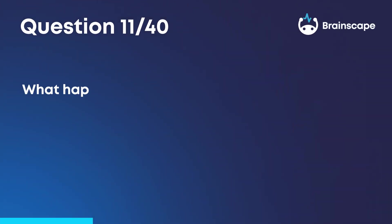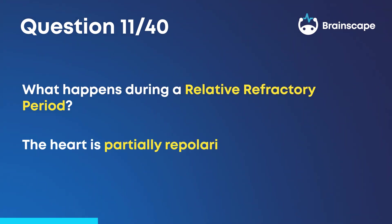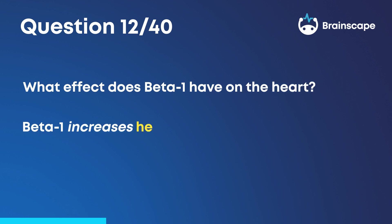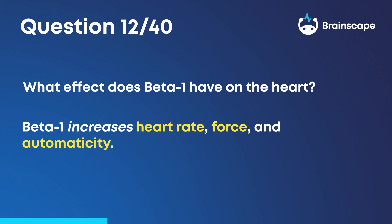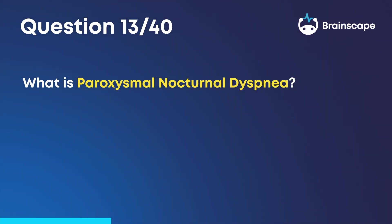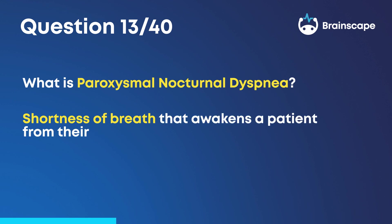Question 11: What happens during a relative refractory period? During a relative refractory period, the heart is partially repolarized and able to respond to stimulus. Question 12: What effect does beta-1 have on the heart? Beta-1 increases heart rate, force, and automaticity. Question 13: What is paroxysmal nocturnal dyspnea? Paroxysmal nocturnal dyspnea is shortness of breath that awakens a patient from their sleep.